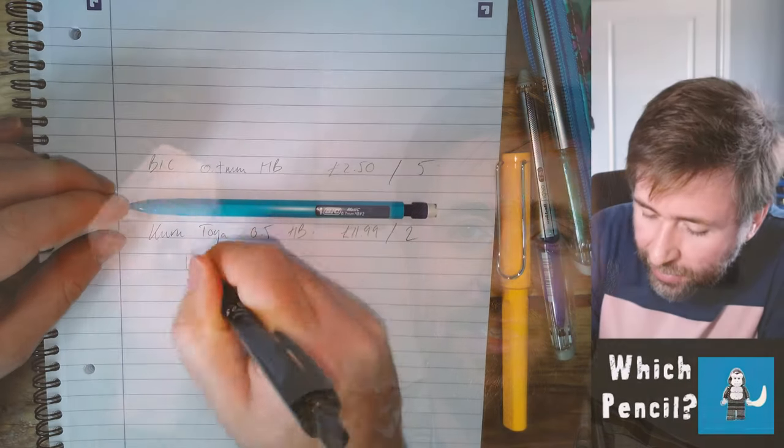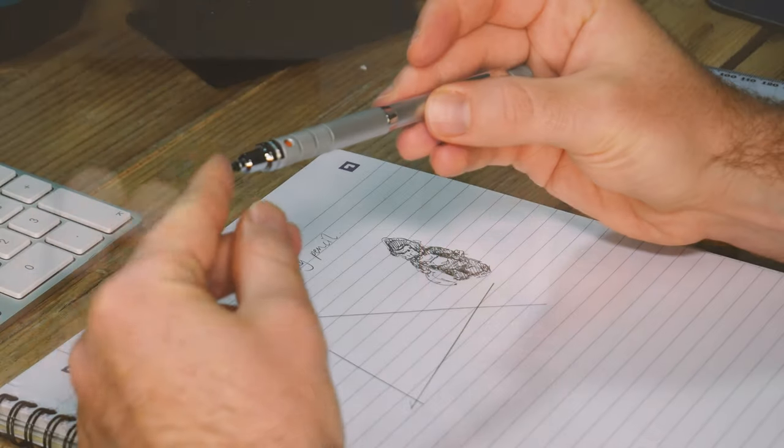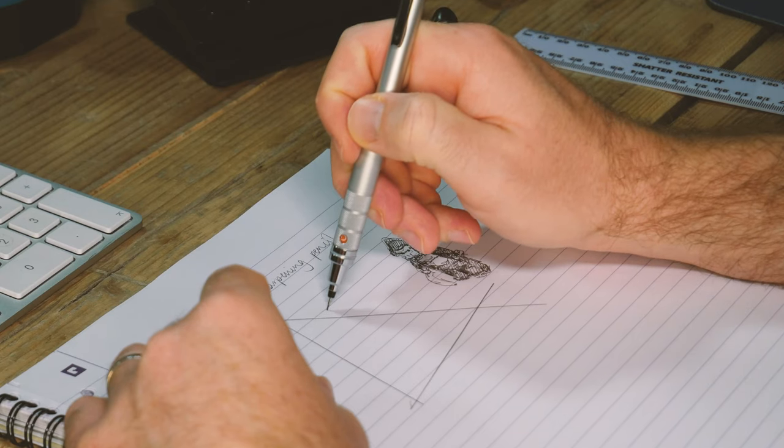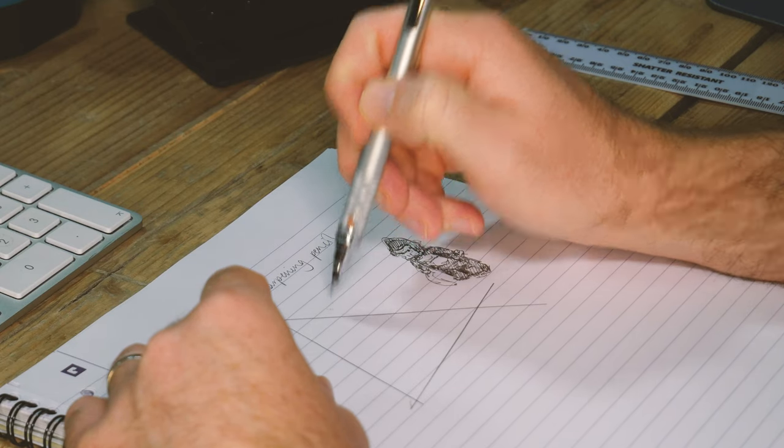The Kuri Toga actually every single time you press it down, every single time you press the nib in, it turns the nib ever so slightly. Pencils are designed to be rotated as you draw the lines and that's how you keep the nib exactly the same width. The Kuri Toga does that every single time you press it down, it rotates the lead for you.